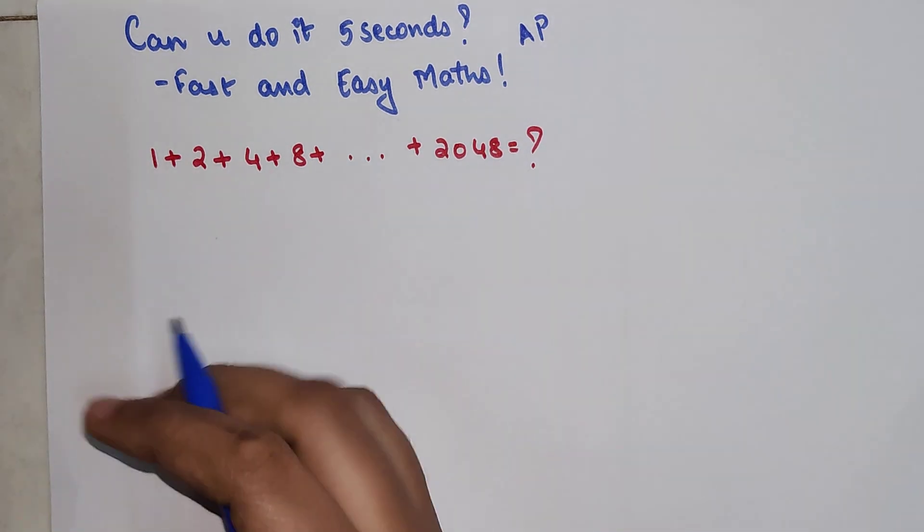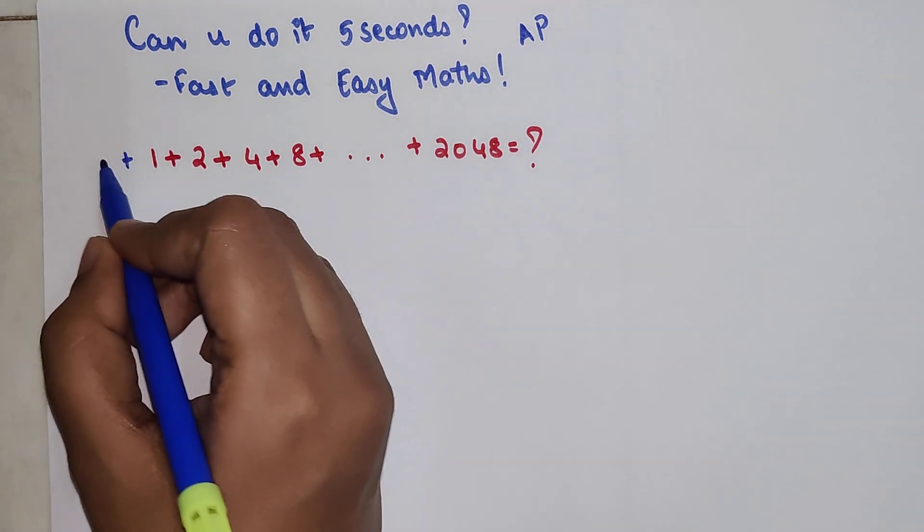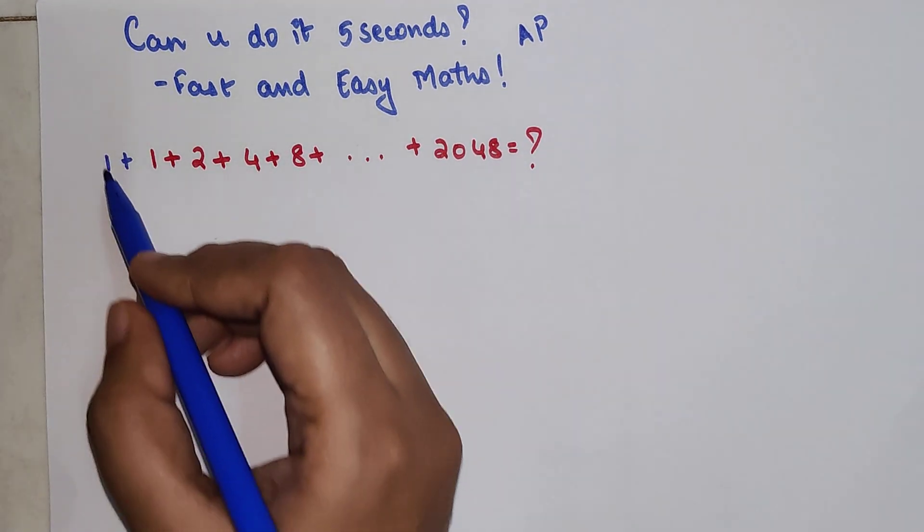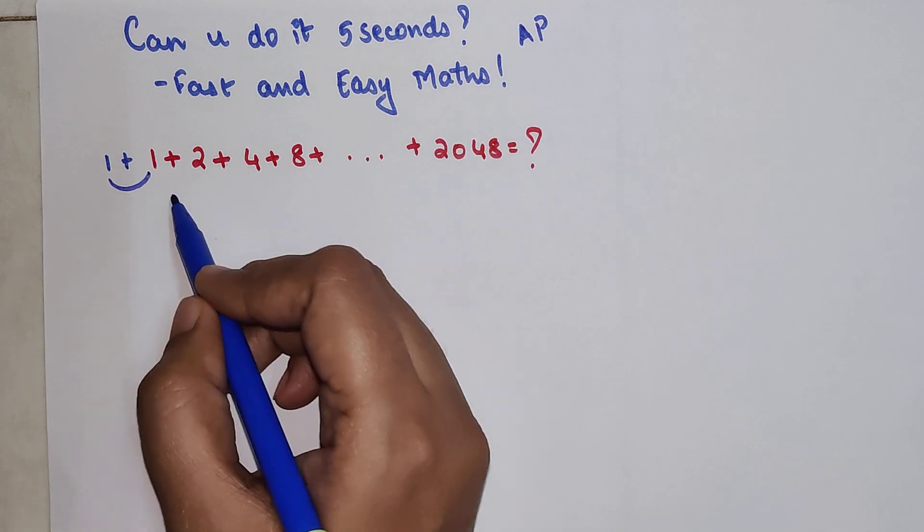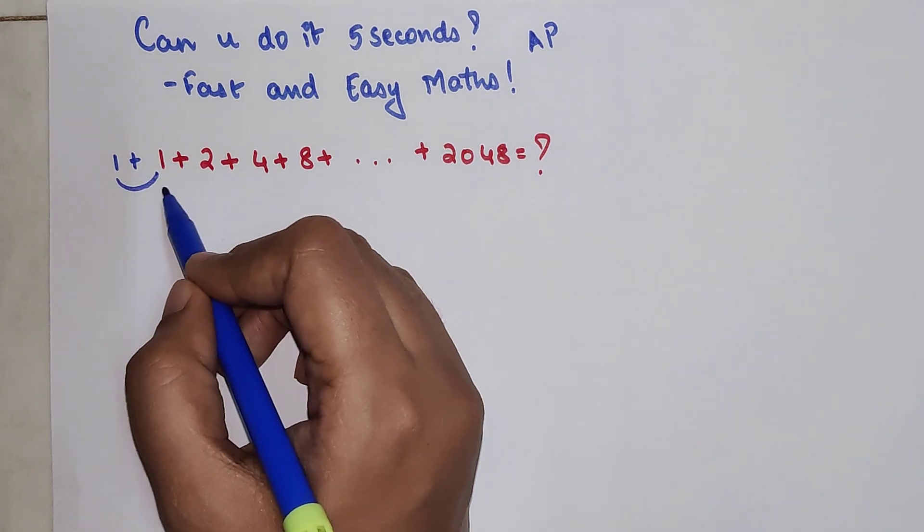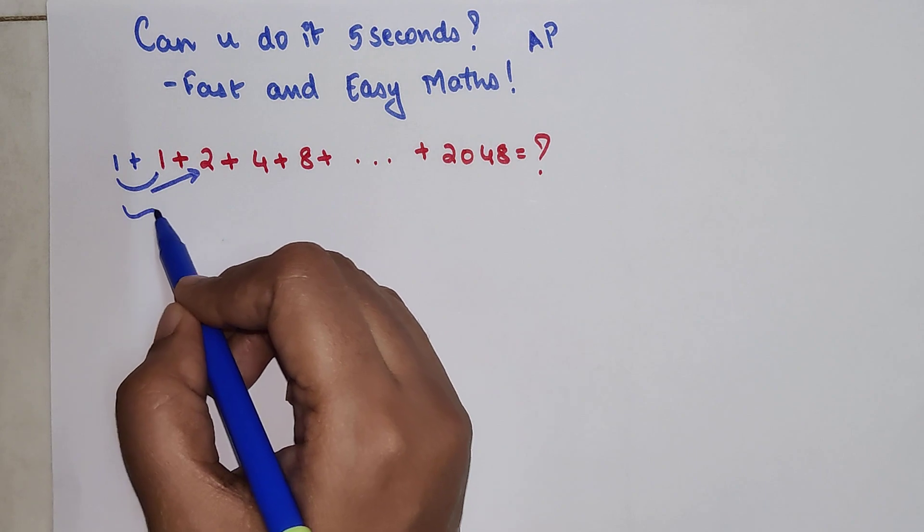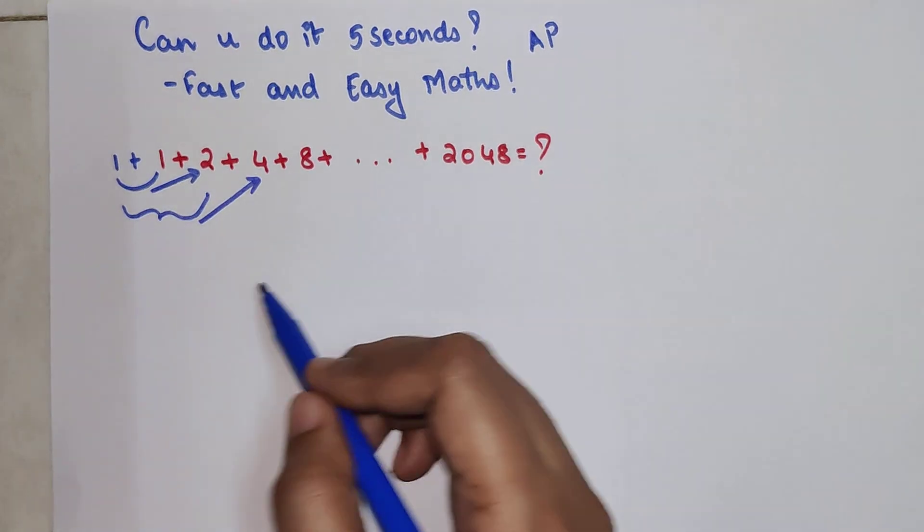Now if you look closely, what if I add a 1 here? If you see, the addition of these two is getting me the value of 2. Addition of all these three terms is getting me the value of 4.